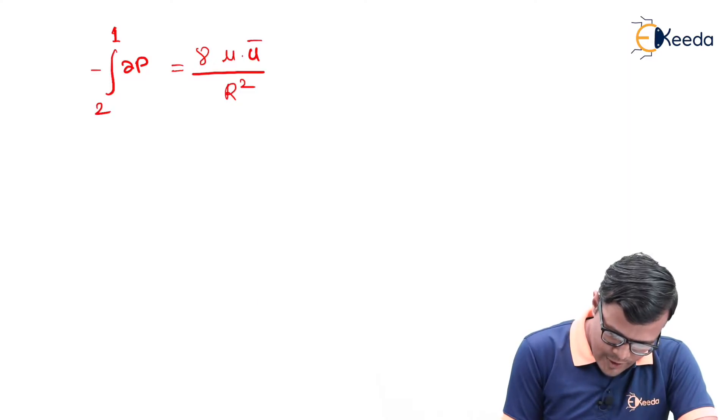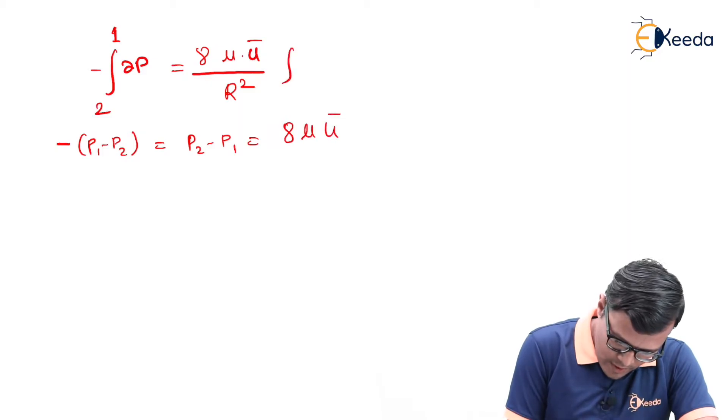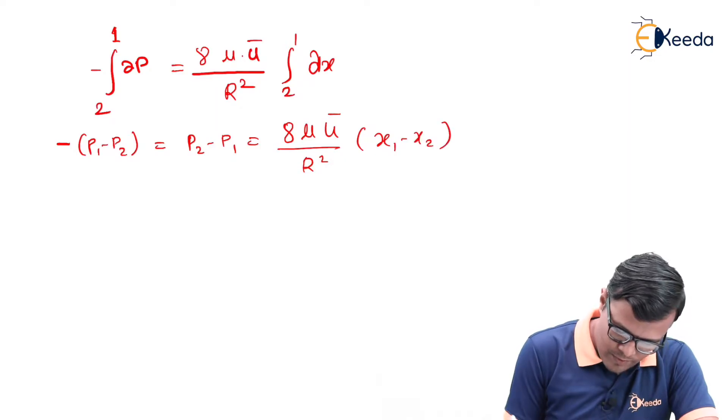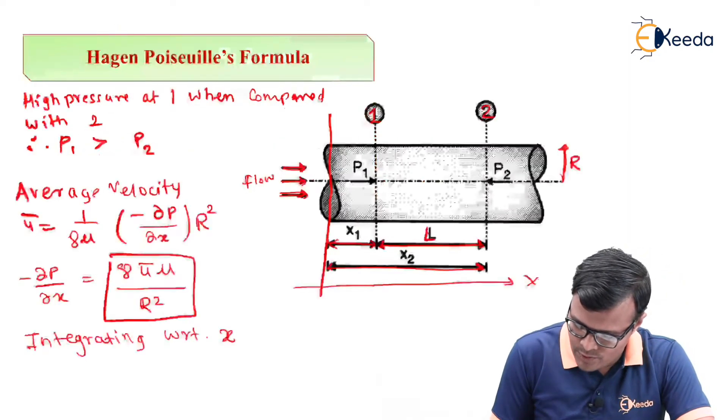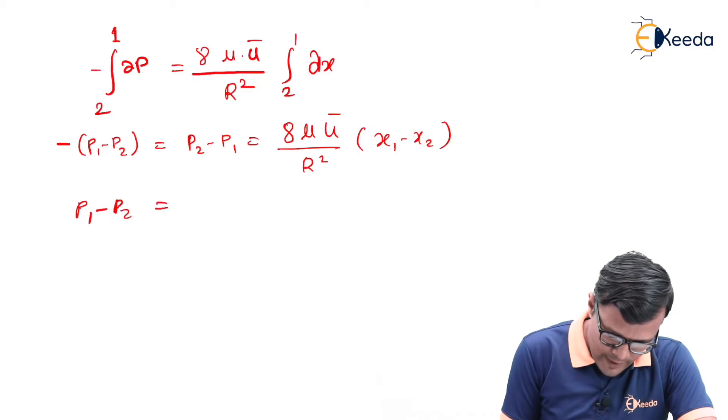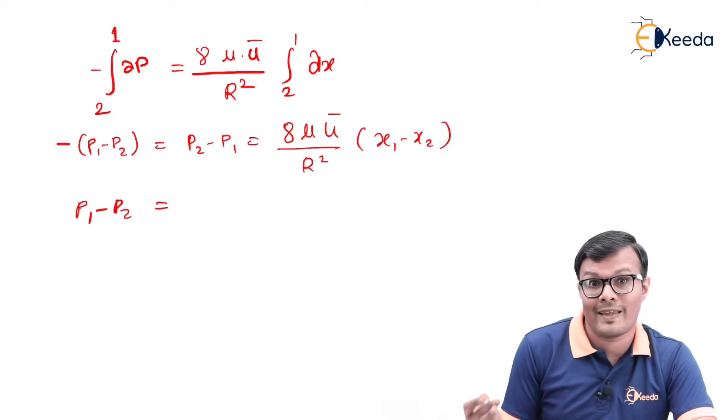This integration becomes minus of P1 minus P2, that is equal to P2 minus P1, that is equal to 8 mu u bar. This integration dx from point 2 to 1 gives 8 mu u bar upon R square times x1 minus x2. We know in the diagram x1 minus x2 is nothing but L. So this x1 minus x2 will become x2 minus x1, and now that is equal to L.